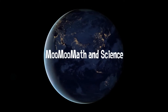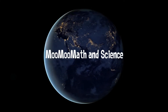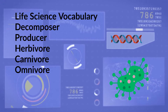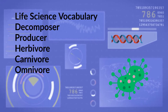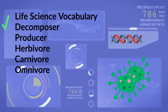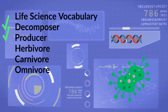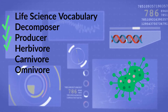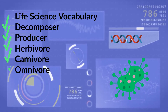Welcome to Moo Moo Math and Science. In this video, let's talk about some life science vocabulary. We will cover decomposer, producer, herbivore, carnivore, and omnivore.